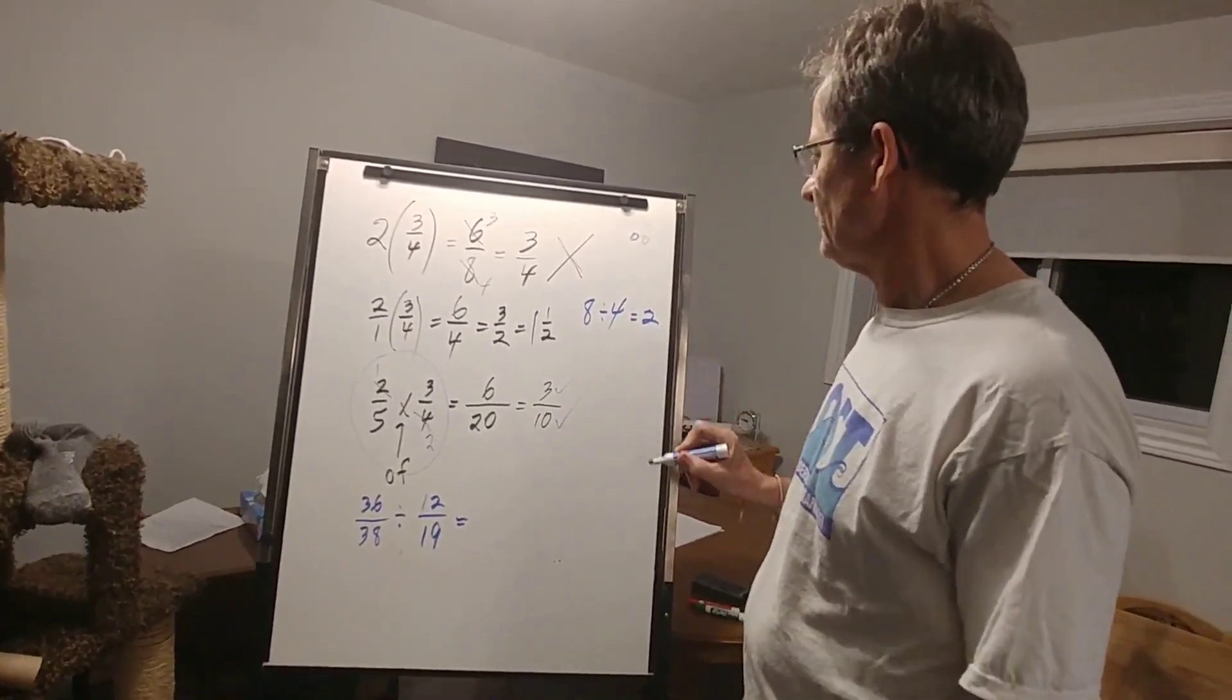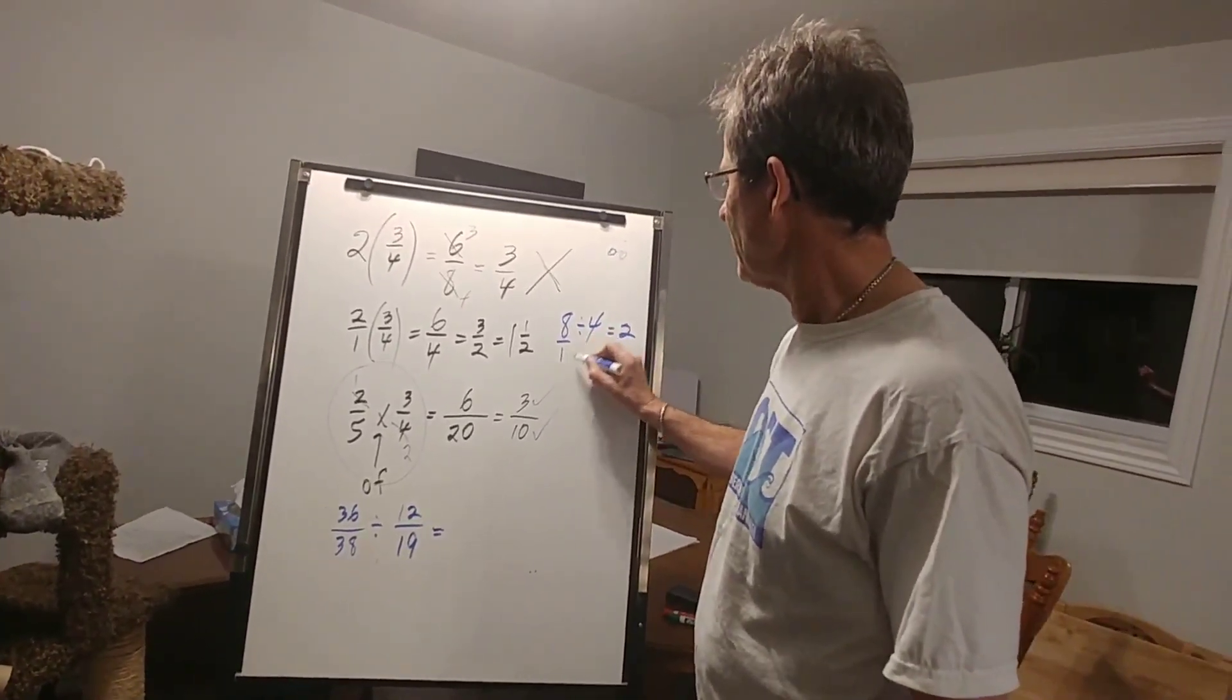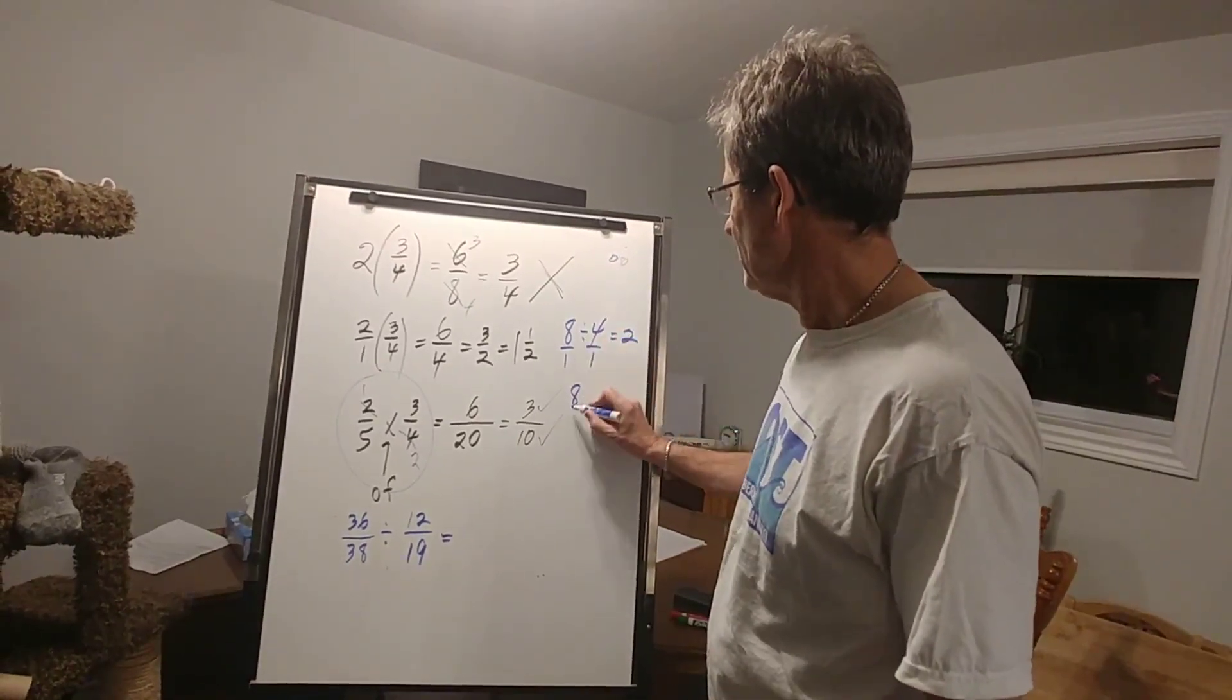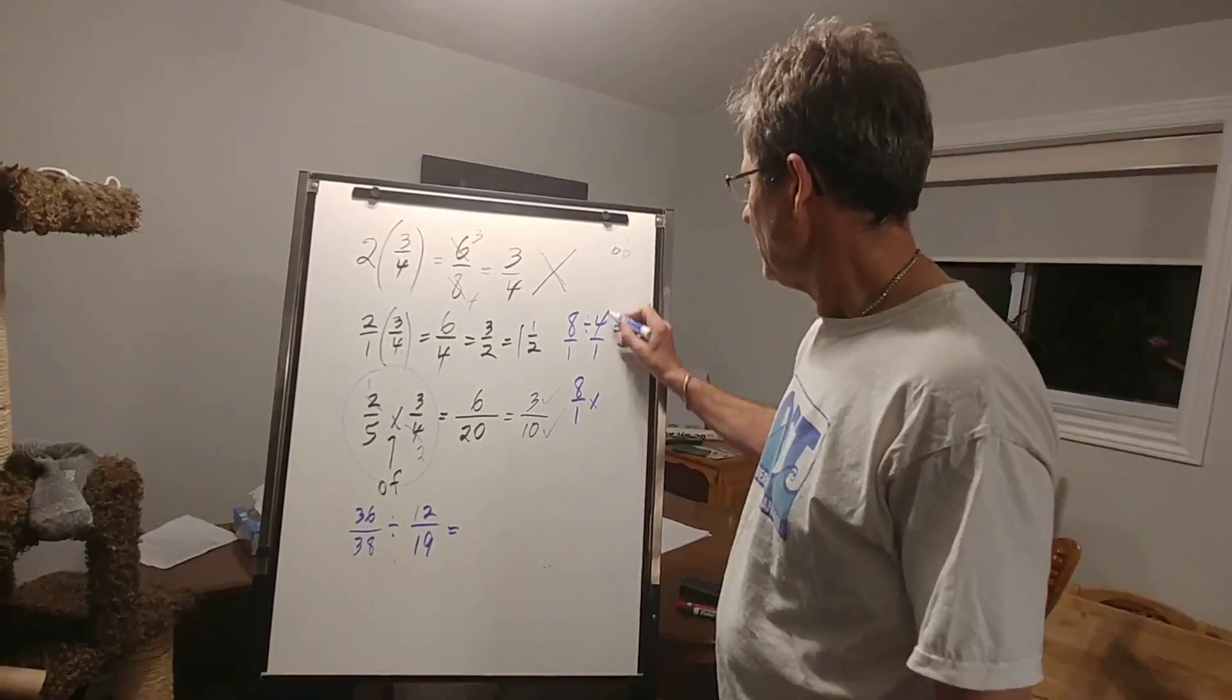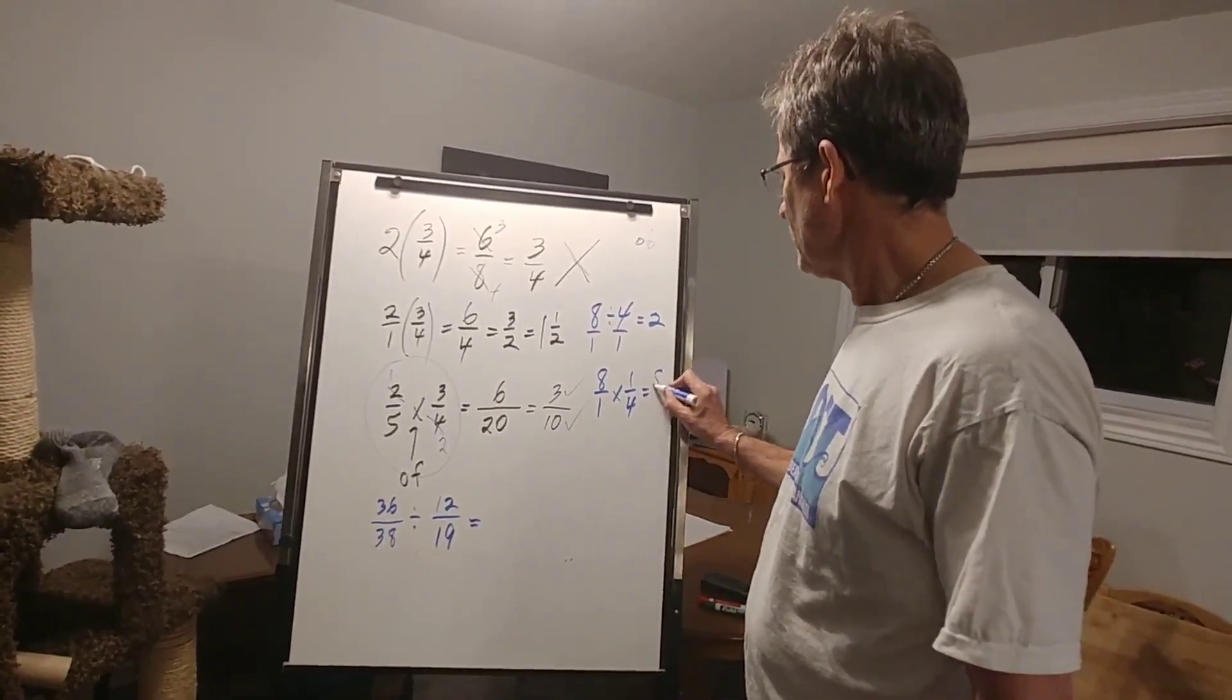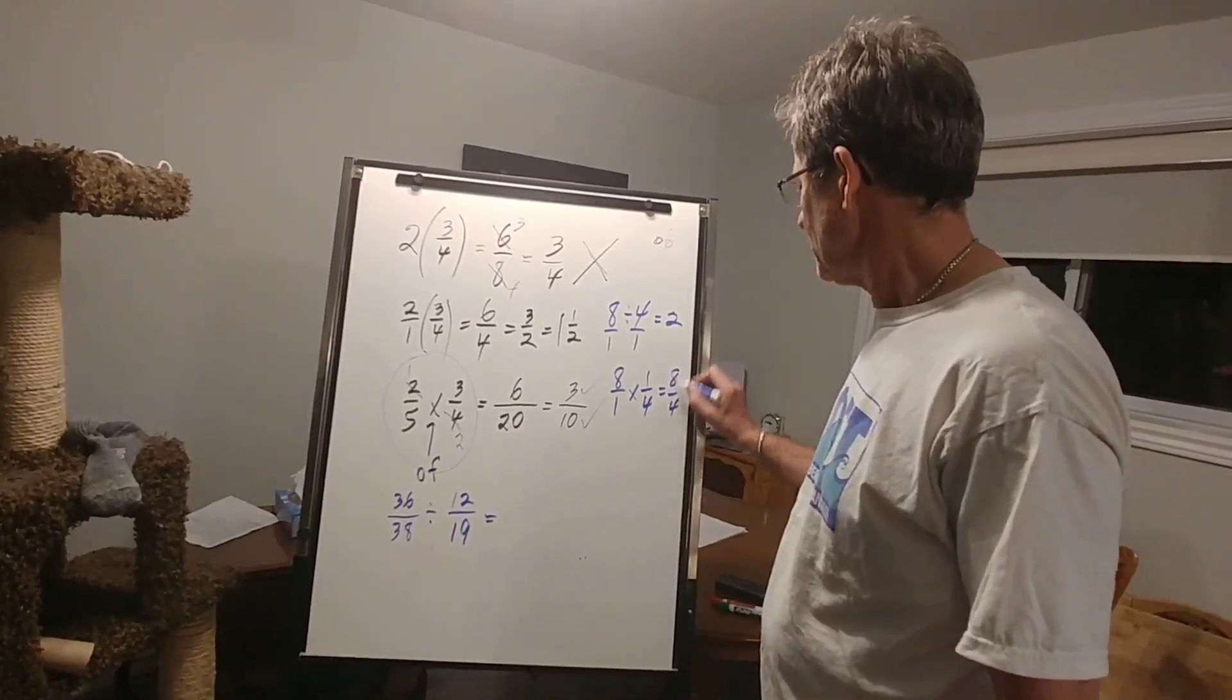Well, we all know that's 2. But if I think of these as fractions, 8 over 1 divided by 4 over 1, if I change the division to multiply, and I take the reciprocal of a quarter, I'm going to get 8 over 4, which is indeed 2.